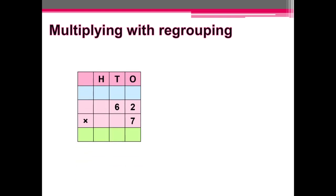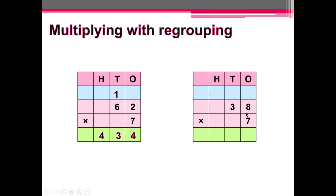Now, multiplying with regrouping. We'll multiply using the regrouping method. For example: 7 multiplied by 2 is equal to 14 — we'll write 4 here and carry 1 here. Now 7 multiplied by 6 is equal to 42, plus 1 is 43. We'll write 3 at the 10th place and 4 at the 100th place. Next example: 38 multiplied by 7. 7 multiplied by 8 is equal to 56 — we'll write 6 here and take 5 as carry. Now 7 multiplied by 3 is equal to 21, plus 5 is 26. We'll write 6 at the 10th place and 2 at the 100th place.